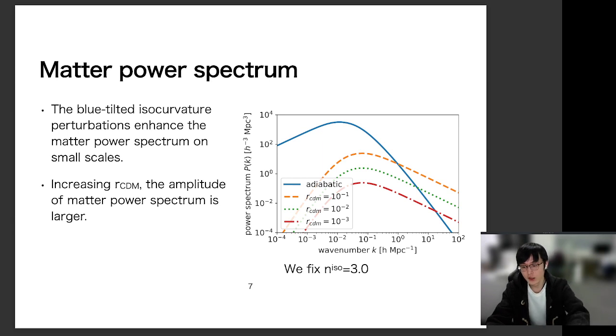So we used these formulas for transfer functions. And we calculate the total matter power spectrum from adiabatic and isocurvature perturbations. And in this figure, we plot the matter power spectrum for different isocurvature fraction. The blue solid line is the matter power spectrum from the pure adiabatic mode. And the dotted and dashed lines show the isocurvature perturbations